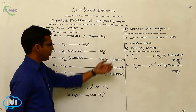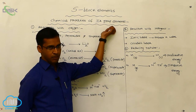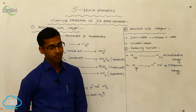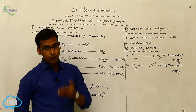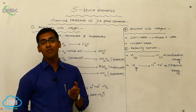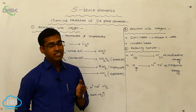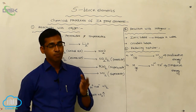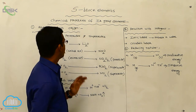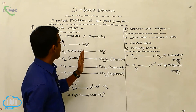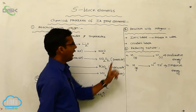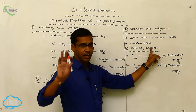Hydration energy, which was discussed in the previous topic on physical properties — from top to bottom, hydration energy decreases due to increasing atomic size. Lithium shows more hydration power or more hydration energy compared to francium or cesium. So these are the chemical properties: first, reaction with oxygen; second, reaction with water; third, reaction with halogens; and fourth, reducing nature.